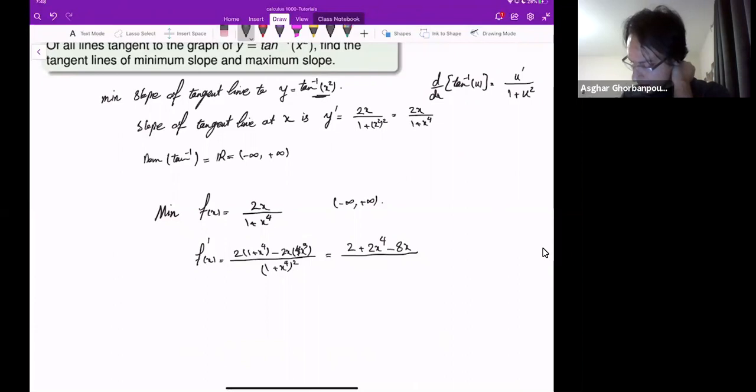And then the denominator is this guy. This will give me 2 minus 6x to the fourth over 1 plus x to the fourth squared.